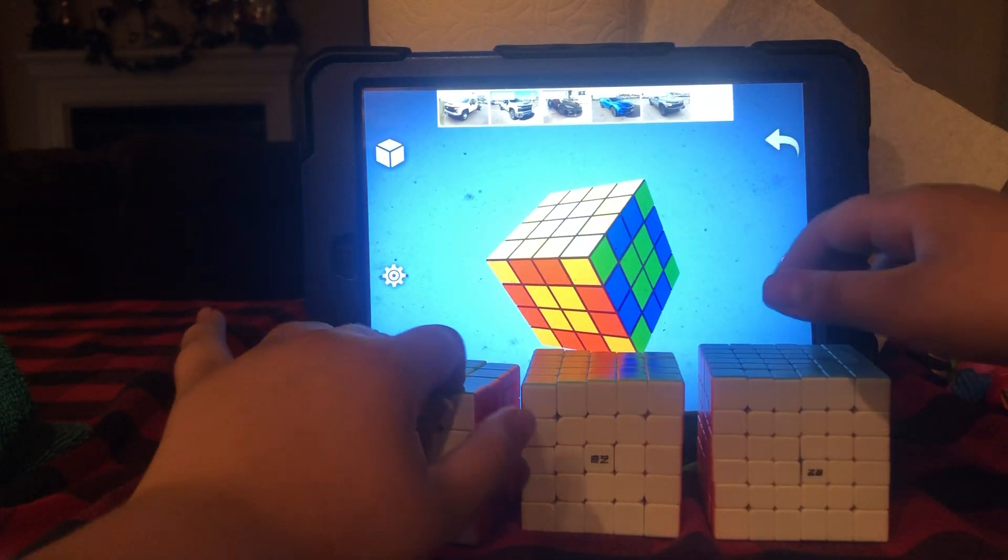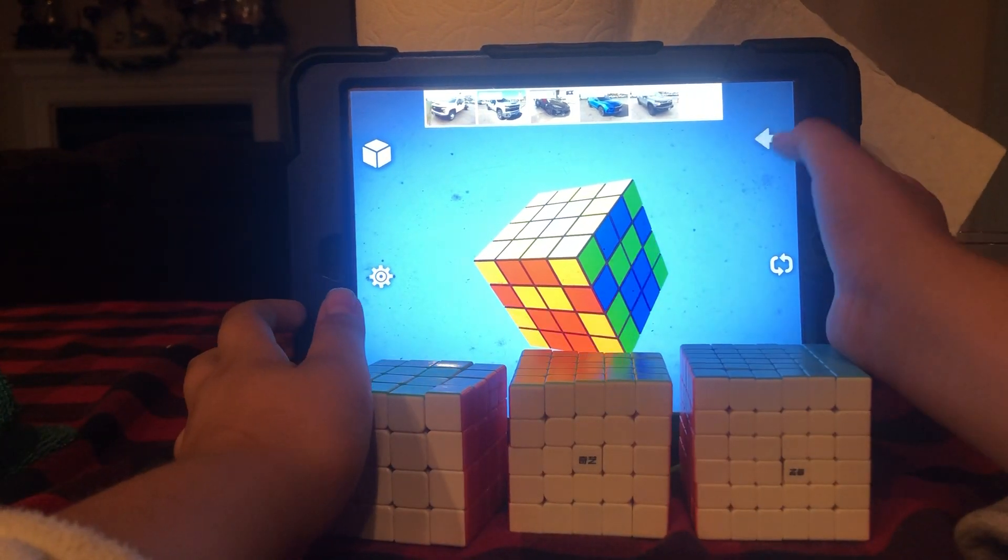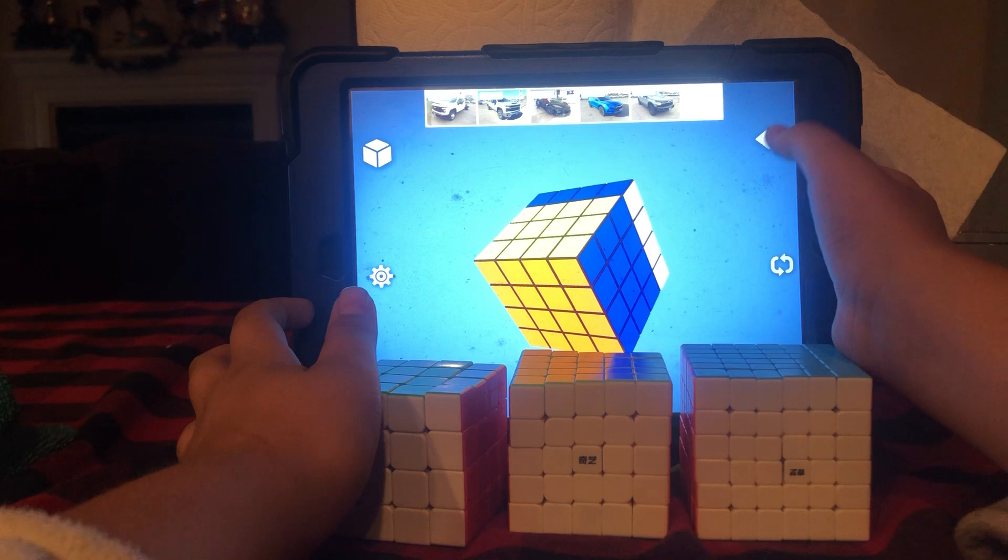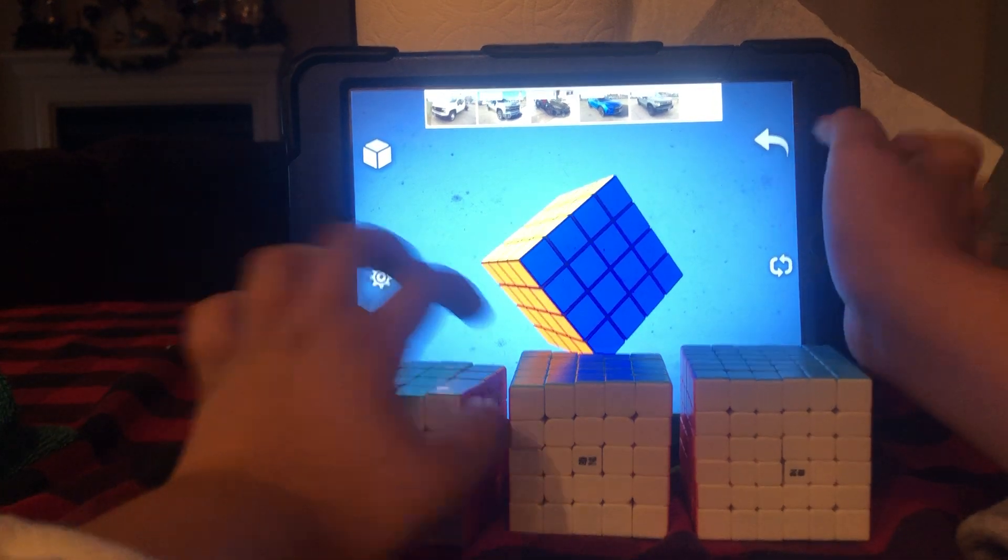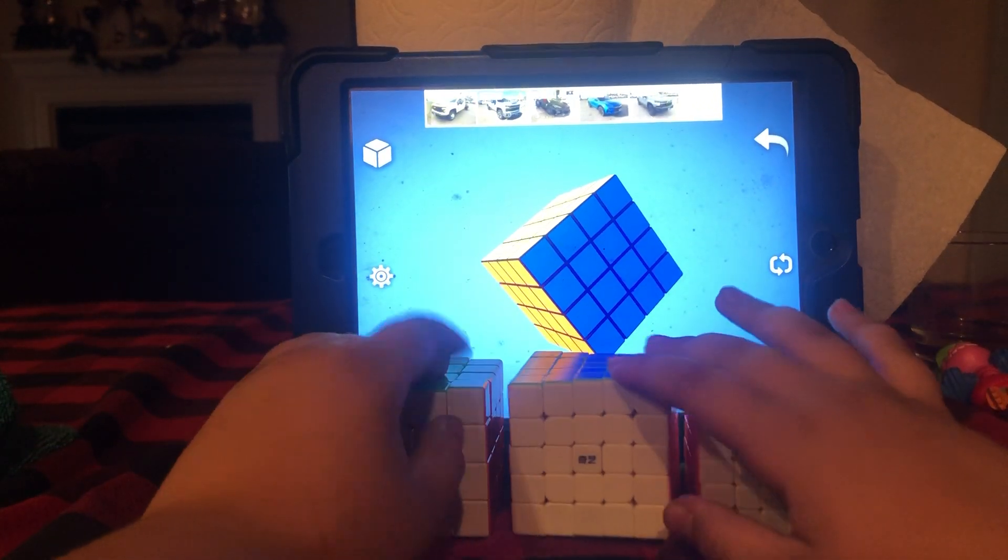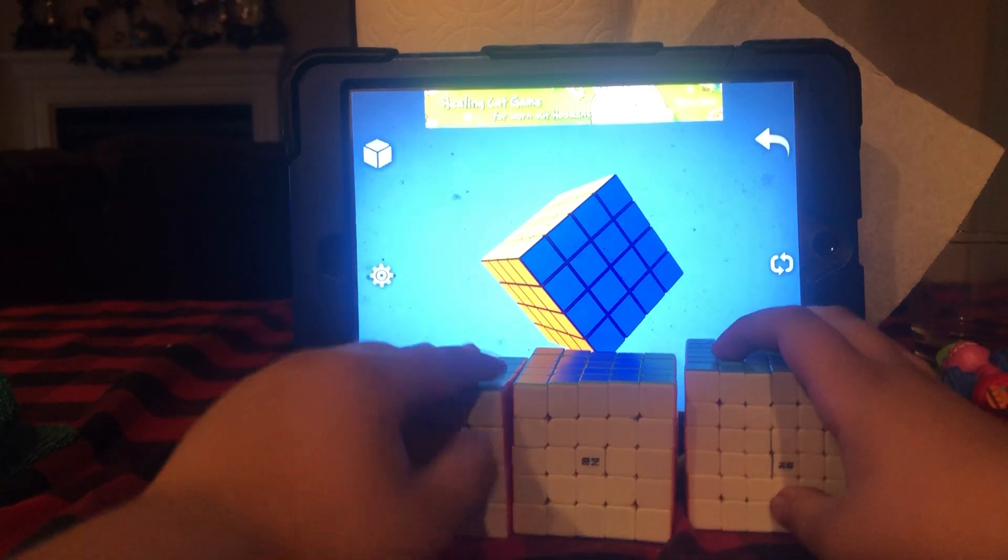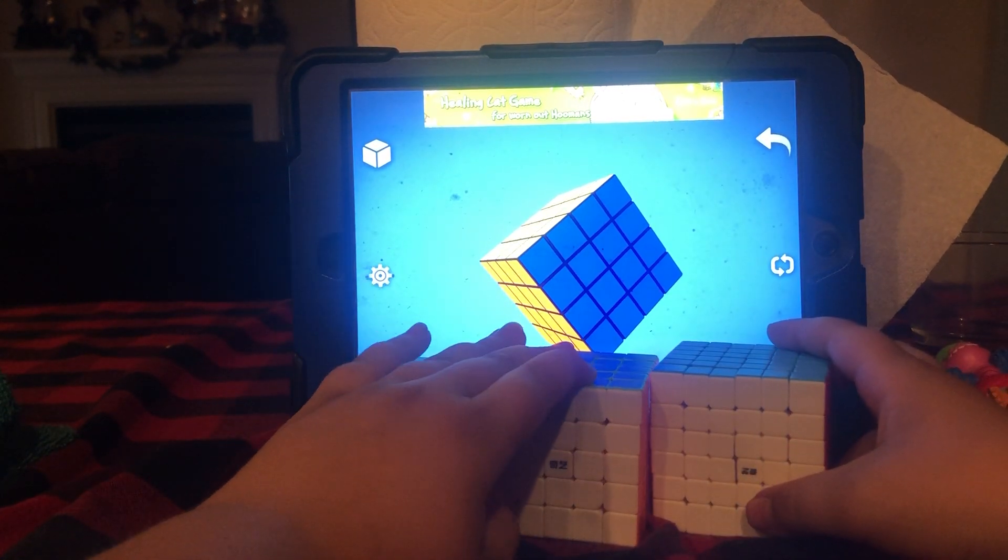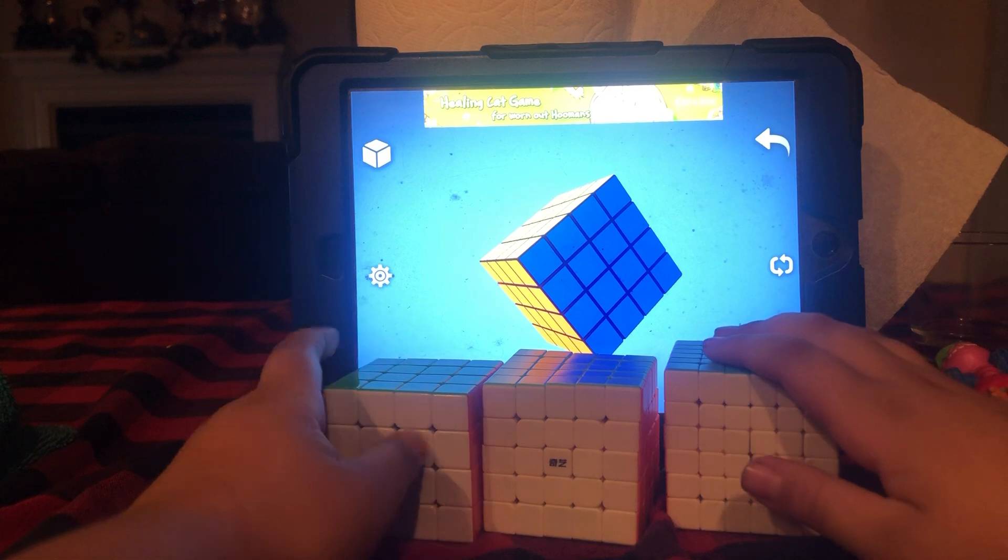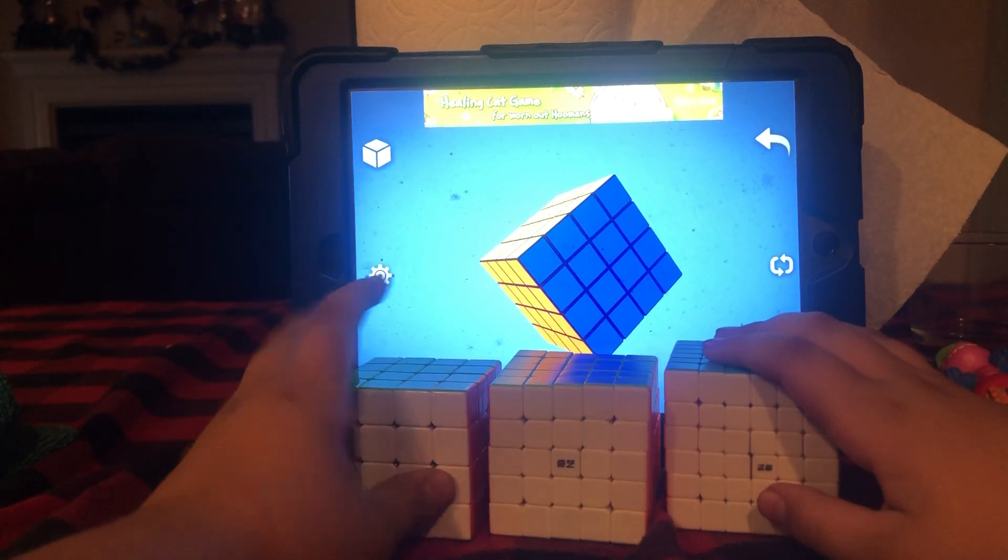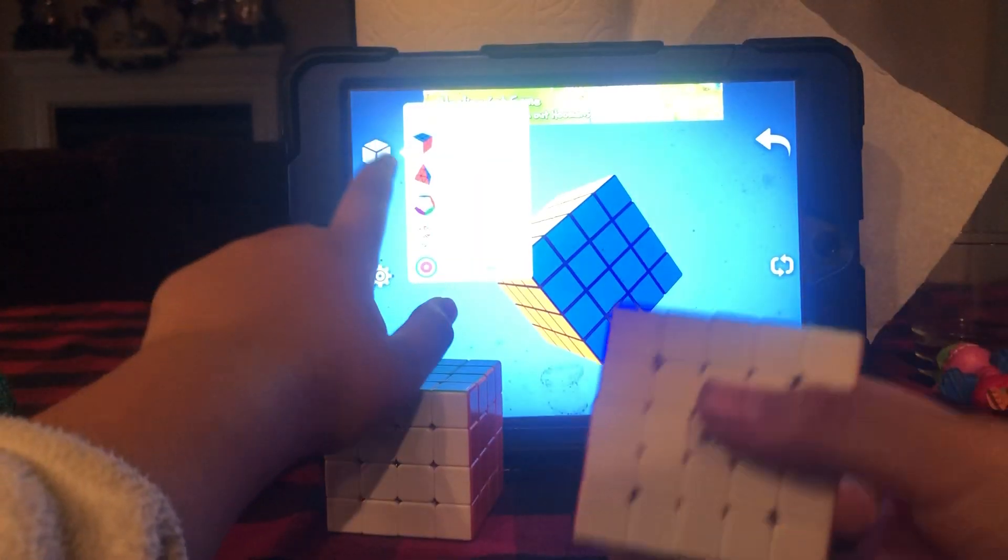Now I'm gonna do the 5x5. Let's turn this back to a solved cube. Now let's do the 5x5. First, let's label these. This is the Rubik's Master, this is the Professor's Cube, and this is the V-Cube. Now let's do the 5x5.